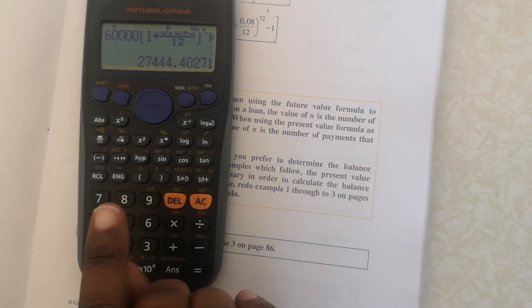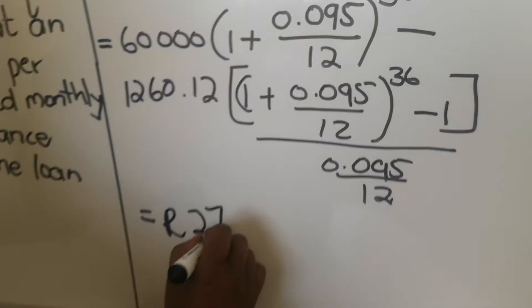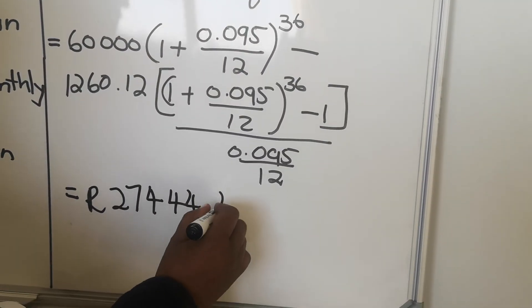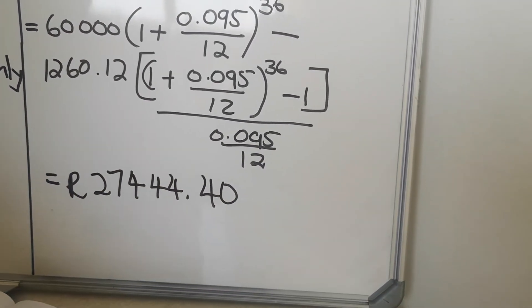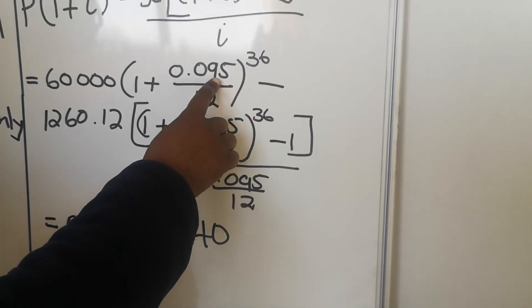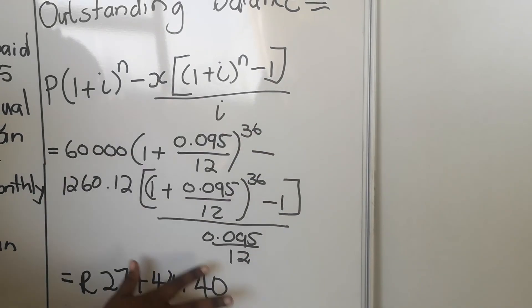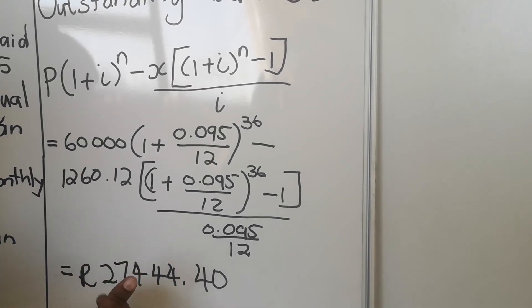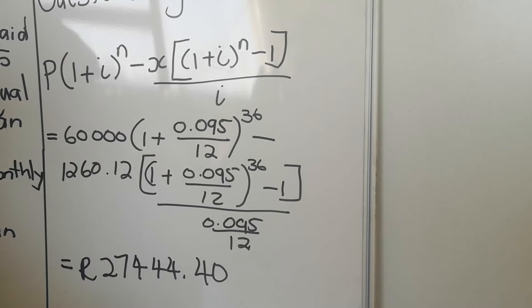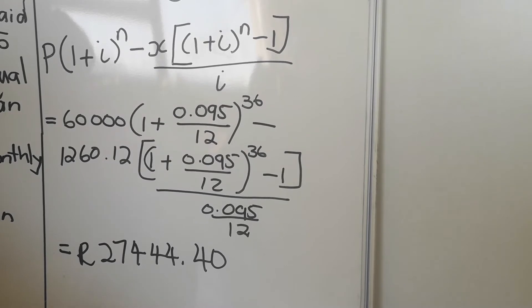Your answer will be R27,444.40. What is nice about financial maths is that you get marks at each step along the way — even if your final answer is wrong, you earn marks for each correct value. So don't panic. Just practice, get these values correct, and you'll earn marks.